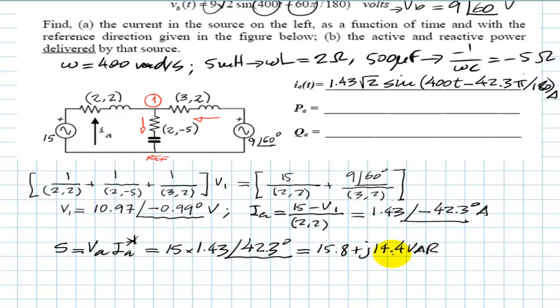The real part is 15.8 watts, and the imaginary part is j14.4 VARs. That is the active power of 15.8 watts delivered by source A, and the reactive power of 14.4 VARs delivered by source A.